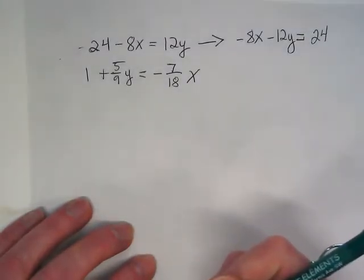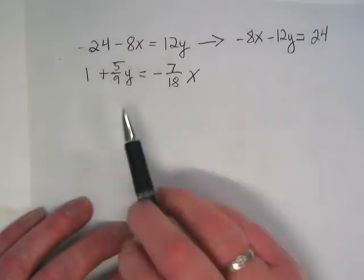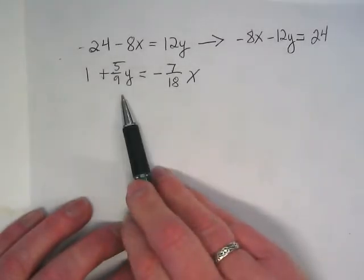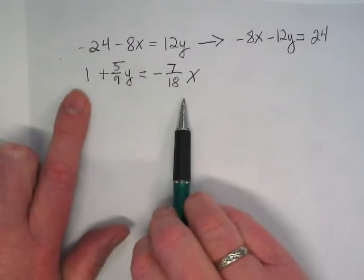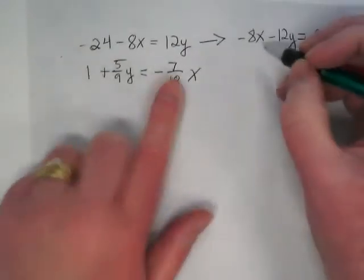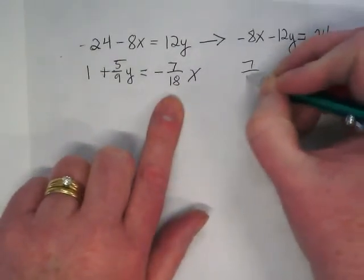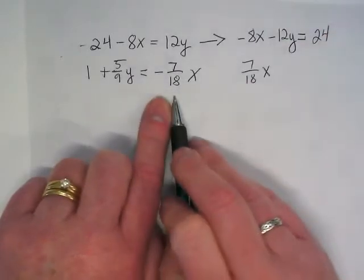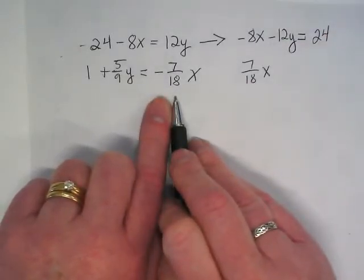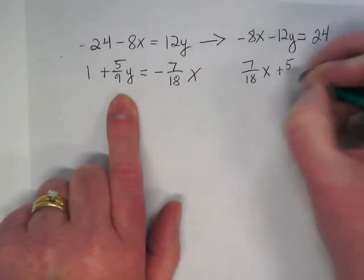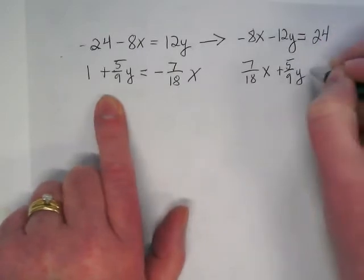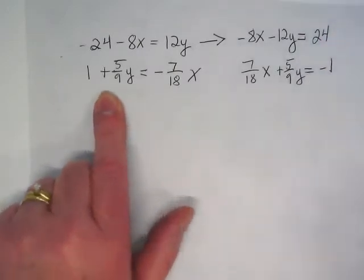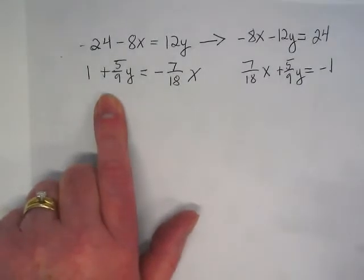Same is true with the second equation. It's not in standard form. The 5 ninths y stays, but the other two things are going to switch. So I'm going to rewrite this as 7 eighteenths x, because the negative 7 eighteenths is going to be added, plus 5 ninths y equals negative 1. Why negative 1? I have to subtract it to move it to the other side.